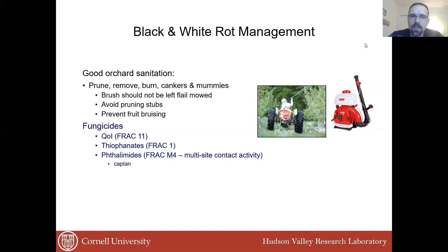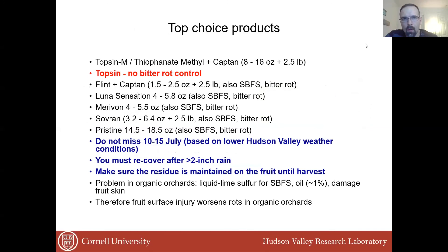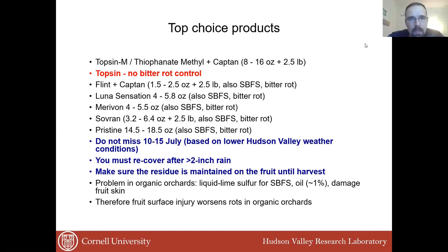We are largely dependent on fungicides to control these fungi. The FRAC group 11 — the quinone outside inhibitors, which includes Flint, Pristine, and Merivon — are very effective against both fungi. Thiophanates, such as Topsin or thiophanate-methyl, are also very effective. Captan is very effective due to its multi-site contact activity, and you should always mix these two together. The top choice products would be Topsin M or Captan. However, remember that while Topsin controls black and white rot, it does not have satisfactory control of bitter rot, which I will discuss next.